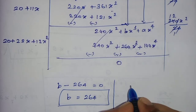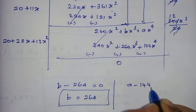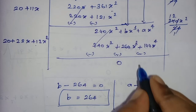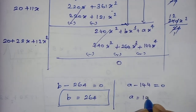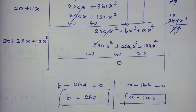And 12x² multiplied by 12x² gives 144x⁴. Change the sign. Since it is a perfect square, the remainder must be 0. So a minus 144 equals 0, giving a equals 144. Now we have found both a and b values.